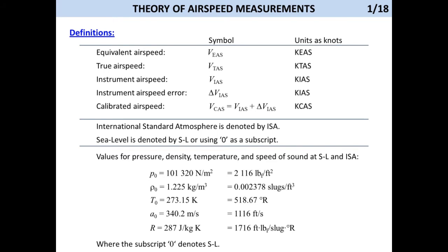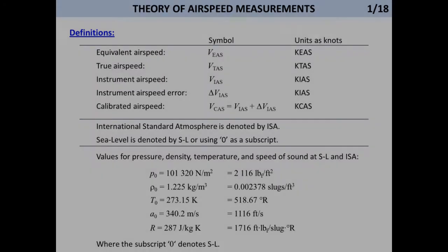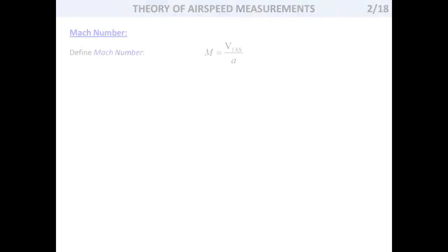Also note the standard sea level values for the atmospheric properties. You can refer back to them by rewinding if you need to. Now let's talk about Mach numbers. The Mach number is defined as the true airspeed divided by the speed of sound, denoted by A.